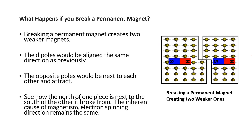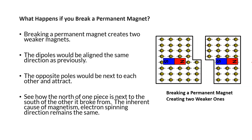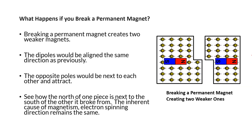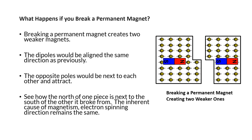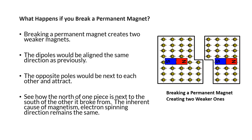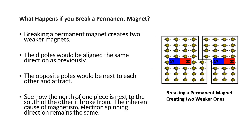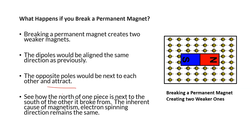What happens when you break a permanent magnet? When you break a permanent magnet, you still have the spinning of the electrons in the domains. As a result, you still have two magnets - they're just going to be weaker because you have less of a composition of areas with fewer electrons. The more electrons spinning in the same direction in the domains, the stronger the magnet. And when you separate them, since you have south on one side and north on the other, they're going to want to attract each other.